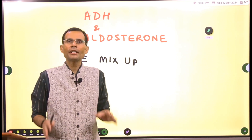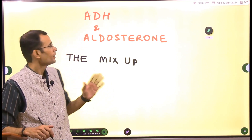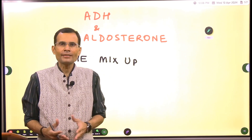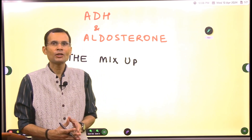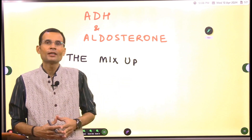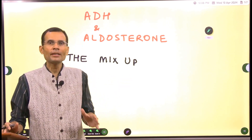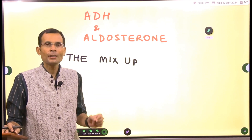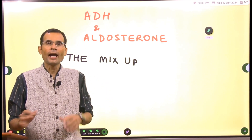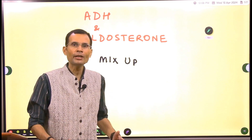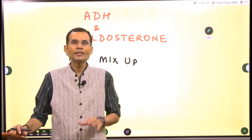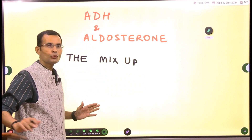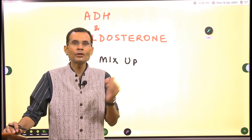ADH and aldosterone are two hormones — like twin brothers — that students often mix up. The confusion is about their mechanism of action: what they actually regulate and how they perform those functions. This video explains the mechanism of action of these two hormones, why they are called into action, and what their eventual effects are.